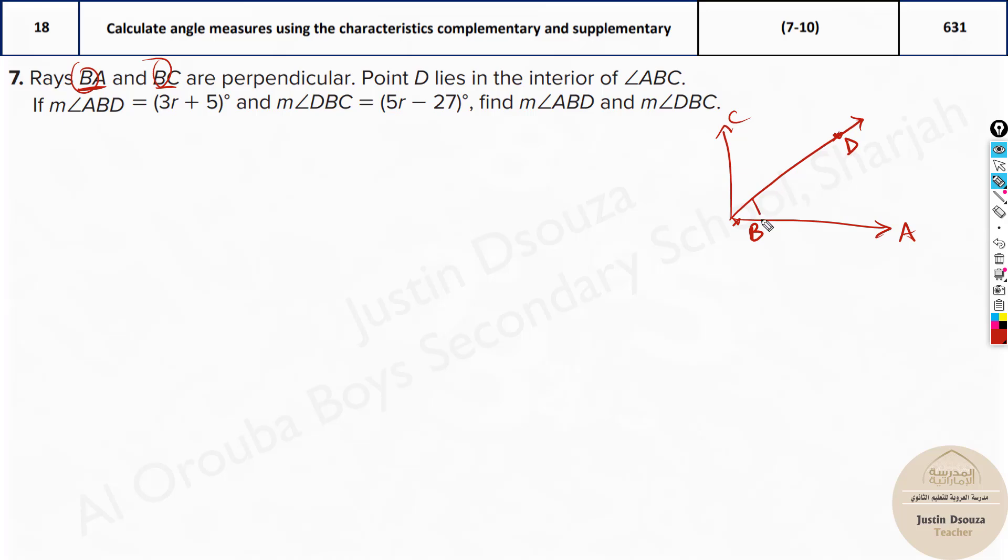Now we can get these angles right. ABD is 3r + 5 and DBC is 5r - 27. You need to find this measure. This is fine because we can easily find r now, because we know when we add these two angles, ABD plus DBC, what we will get is 90 degrees because they are perpendicular. So they are complementary.